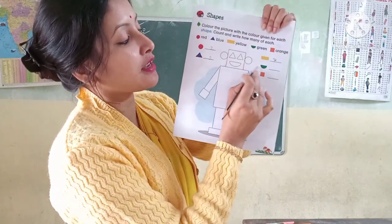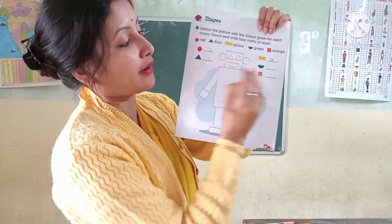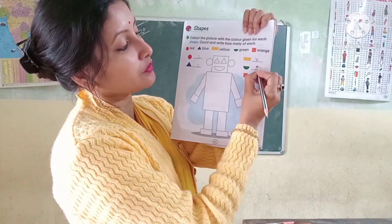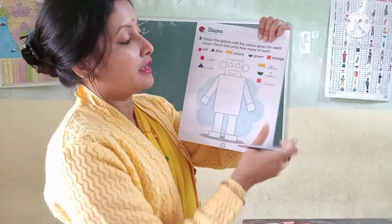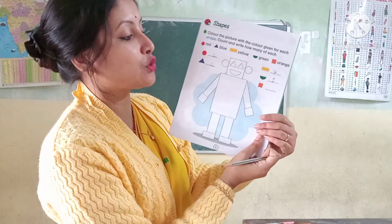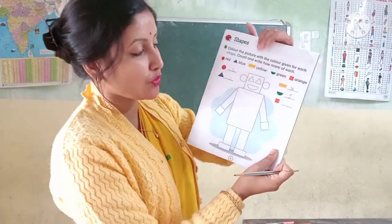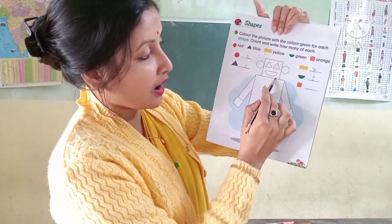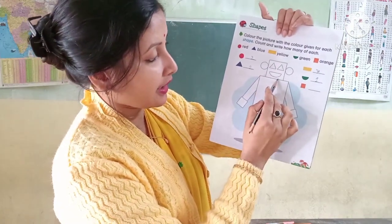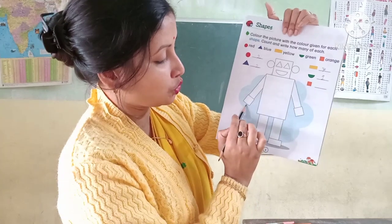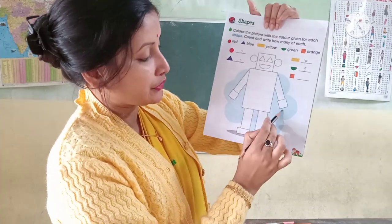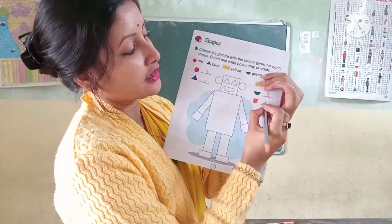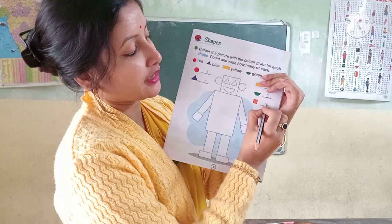And semi-circle — only one. Write one. Next one is square. How many squares are there? One, two, three — these three are square. Write here, three.